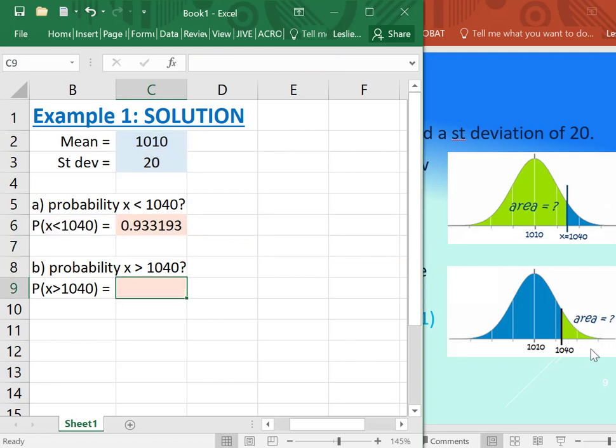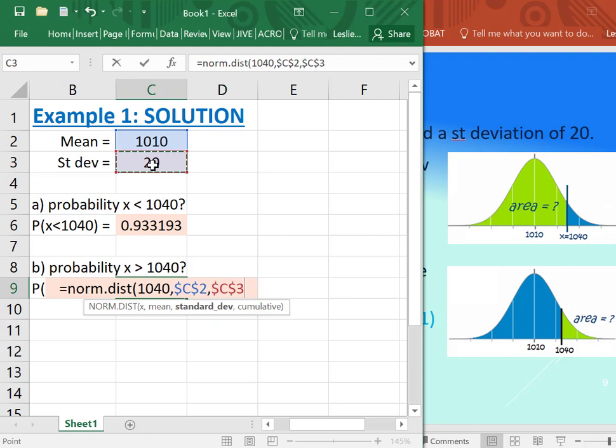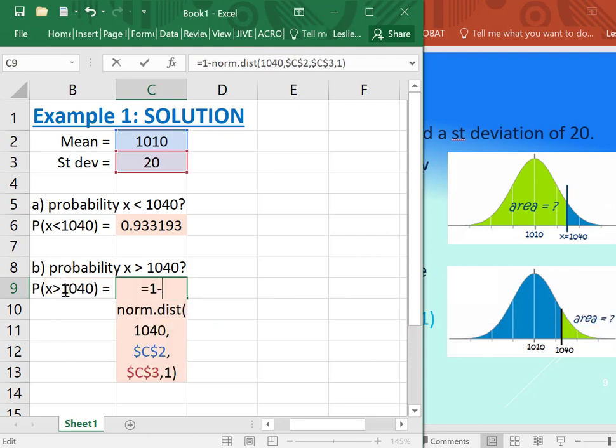Now what is the probability that x is above 1040? Well, two ways of doing this. You can either retype it: equals norm.dist 1040, 1010, 20, and the one, and take one minus that. Or a little bit quicker, since we already have the calculation...